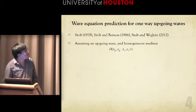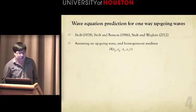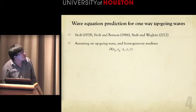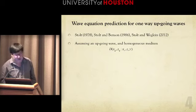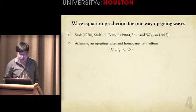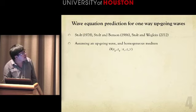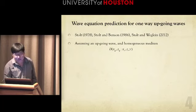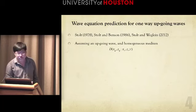First, the theory of the wave equation prediction for one-way up-going waves. Following the work of Stoffa-Ziolkowski and Stoffa-Weglein, we assume an up-going wave in a homogeneous medium. The procedure to perform the wave equation prediction for one-way up-going waves is as follows. So gather D(x_g, z_g, x_s, t), where x_g, z_g represents the receiver location, x_s, z_s represents the source location, and t represents time.